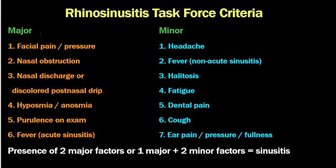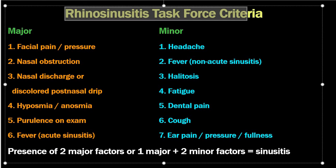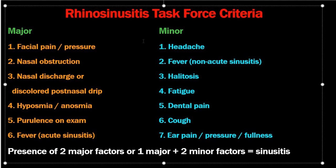The American Academy of Otolaryngology — Head and Neck Surgery (AAO-HNS) Sinusitis Task Force criteria list major factors as facial pain/pressure, nasal obstruction, nasal discharge or discolored postnasal drip, hyposmia/anosmia, purulence on examination, and fever in acute sinusitis. Minor factors include headache, fever, halitosis, fatigue, dental pain, cough, and ear pain/pressure. Diagnosis requires two major criteria, or one major plus two minor criteria.